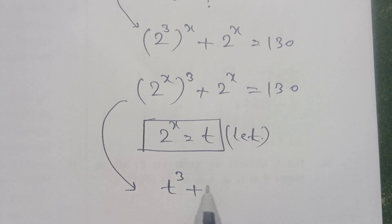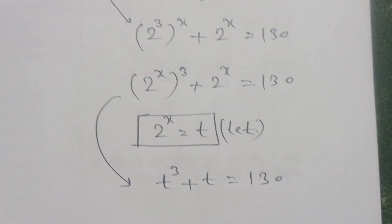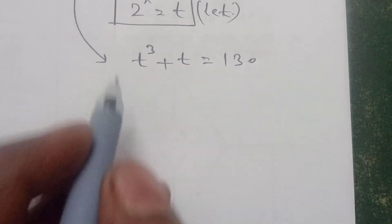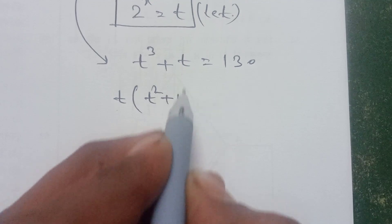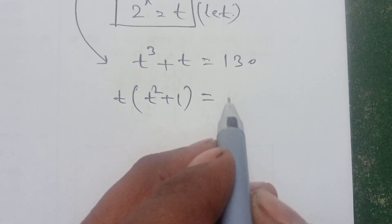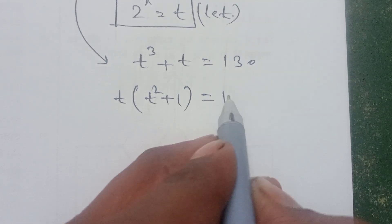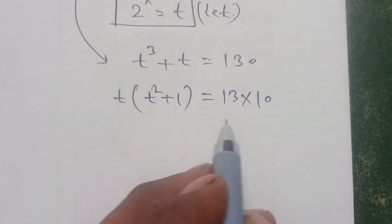So we can write this: t to the power 3 plus t is equal to 130, and t is common, so t times the quantity t squared plus 1 is equal to 130.